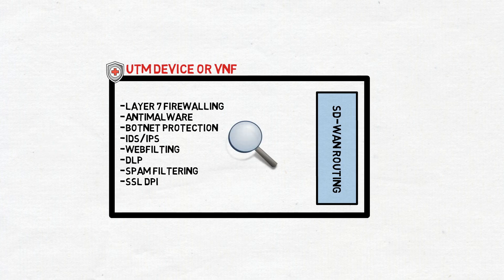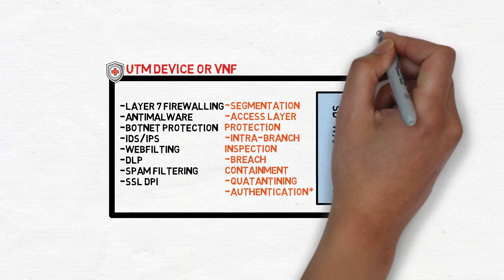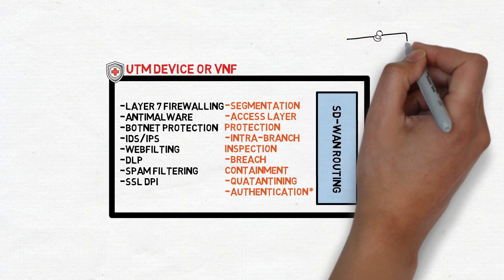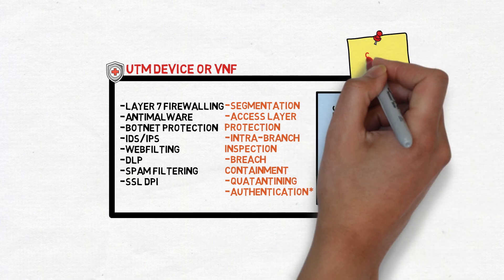Not to mention the number of security services that cannot be performed in the cloud like segmentation, access layer security, intra-branch security inspection, for example, scanning malware on a file share at the branch, breach containment, quarantine, and even local authentication has a lot of caveats. So look out for that and how that's being handled by the particular SD-WAN vendor.